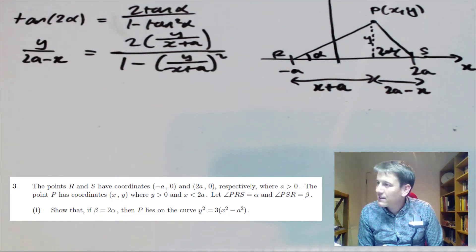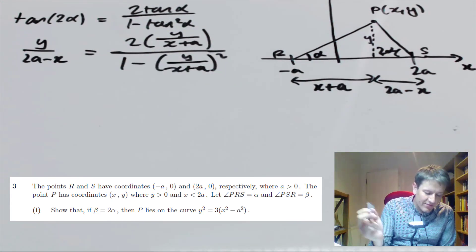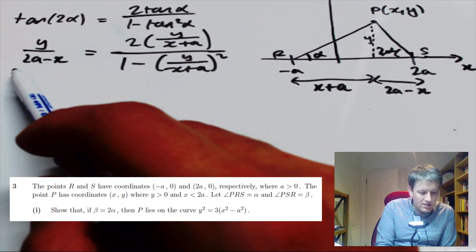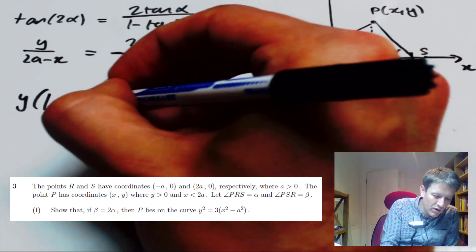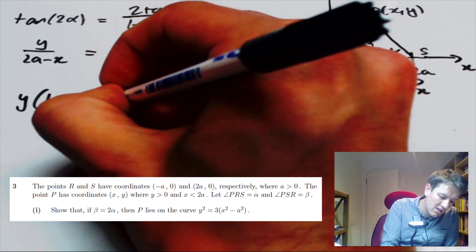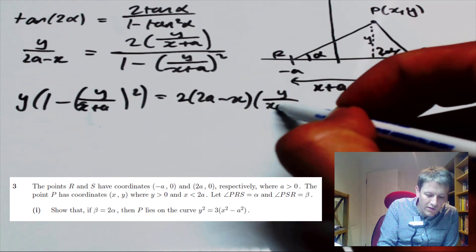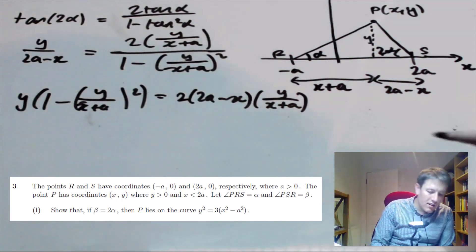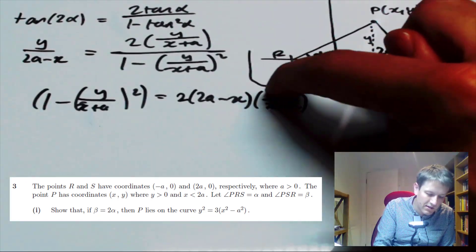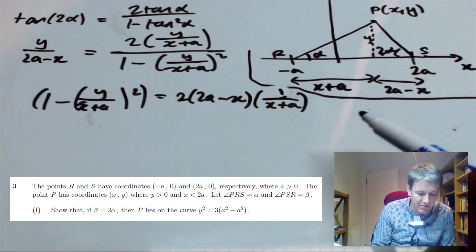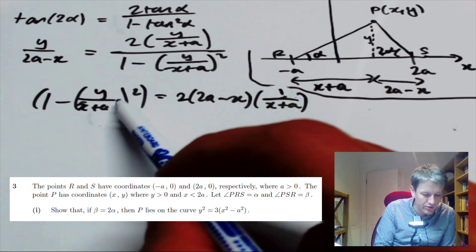Now I'd better hope this rearranges into the required equation. Let's cross-multiply and get rid of the denominators. Writing this as y times (1 − (y/(x+a))²) equals 2(2a − x) times (y/(x+a)). I've got a factor of y on both sides, so let's cancel that — and note that y is not zero since we're told y is positive.